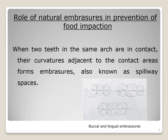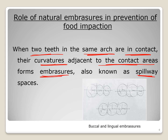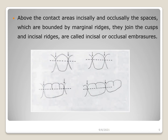Let's first see what natural embrasures are and their role. When two teeth in the same arch are in contact, their curvatures adjacent to the contact areas form the embrasures, also known as spillway spaces. You can see here that buccally and lingually, the arrows show the space between the two teeth. This triangular space beneath the contact is known as an embrasure.